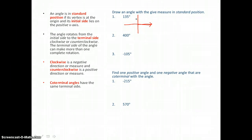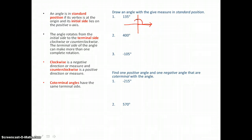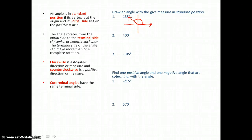We're graphing a positive angle measure, so we're going to move in the counterclockwise direction, which is the positive direction. We'll move 90 degrees and 45 degrees more, so that our terminal side for this angle is in the second quadrant.